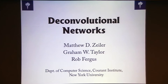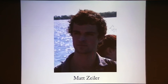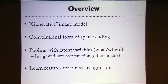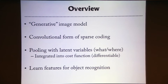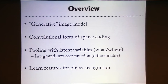Even though I've been working on this, it's really entirely Matt's work. The model being described is a form of generative model — not actually probabilistic, but you can generate from it. It's really a convolutional form of sparse coding, but with some quite substantial changes. One of the most important changes is that pooling is integrated into the model as part of the cost function, with latent variables giving a decomposition into 'what' and 'where' — some form of position and some form of appearance information.